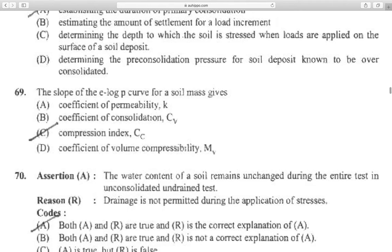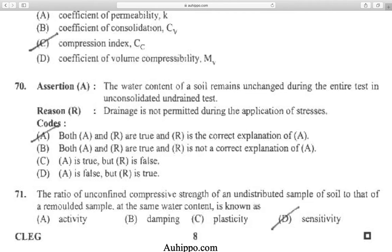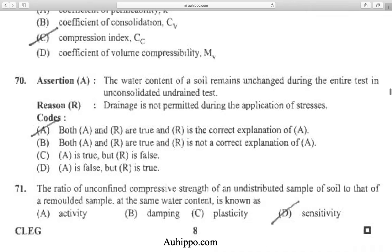Question 68: The slope of e-log p curve for a soil mass is given by compression index Cc. Question 69: The water content of a soil remains unchanged during the entire test in unconsolidated undrained test. Drainage is not permitted during the application of stresses. Both A and R are true, and R is the correct explanation of A.